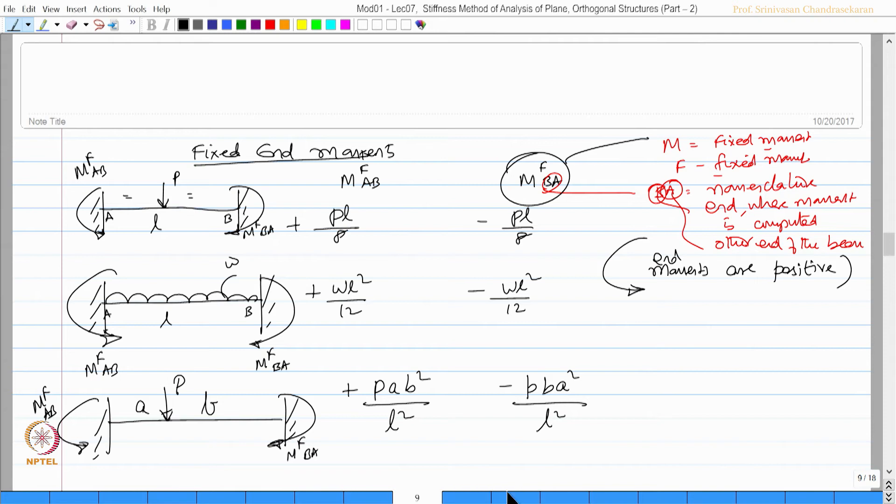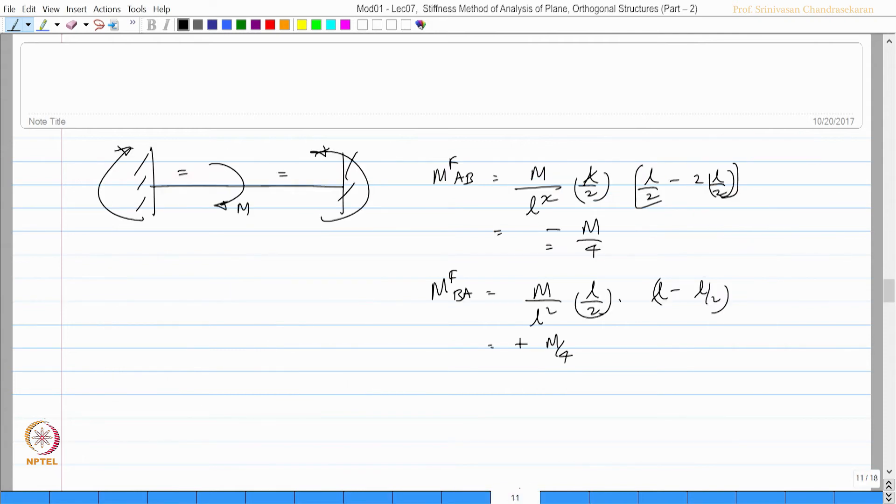Let us quickly explain how the joint load can be calculated for a given problem. Joint load will be simply reversal of the fixed end moments. Let us remember this: joint load is reversal of fixed end moments.